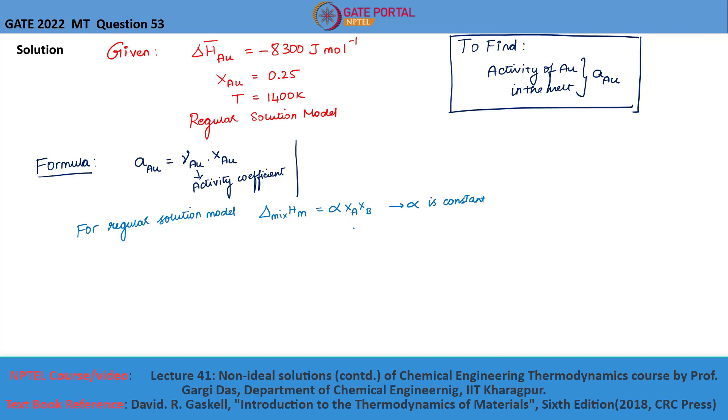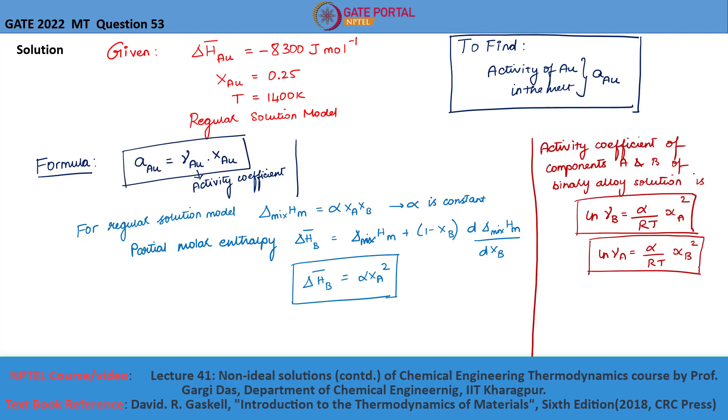The partial molar enthalpy by definition is given by the equation. This equation is required for our solution. Another formula that is required is the activity coefficient of components A and B of the binary solution, given as ln gamma_A equals alpha by RT into X_B square and ln gamma_B equals alpha by RT into X_A square.